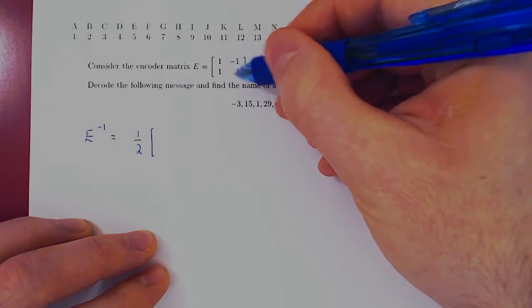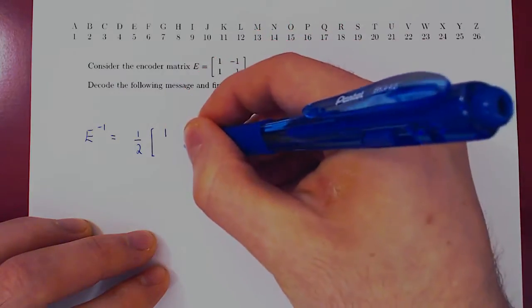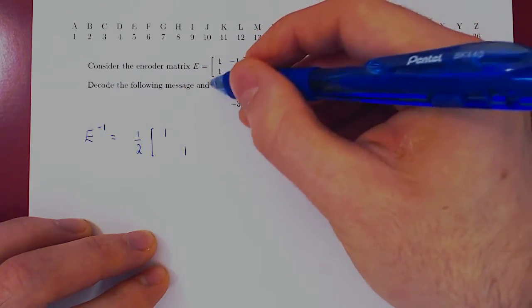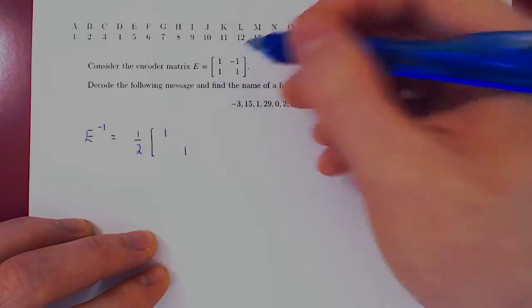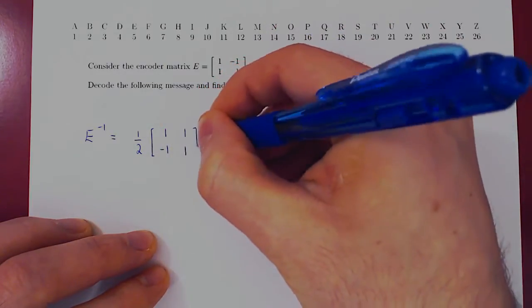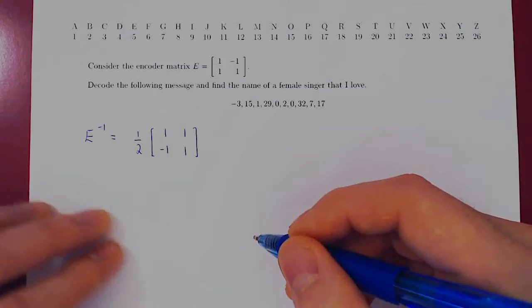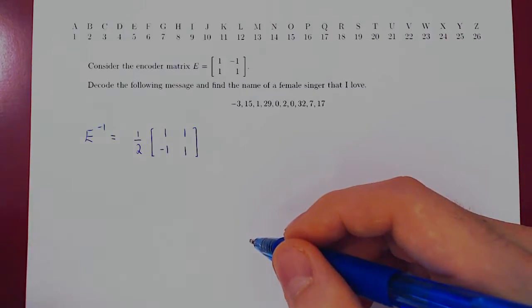Times, we flip the diagonal entries, so 2, 1, and we negate the other two entries, so we'll get negative 1, 1. So now we have the inverse of the encoder matrix.